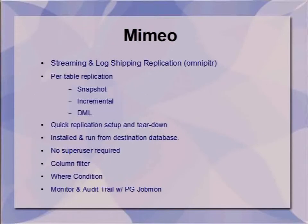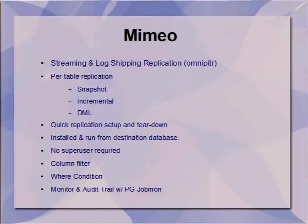Built into Postgres is streaming and log shipping, but that's all-or-nothing — except for the upcoming logical replication features in 9.4. There are three basic types of replication in Mimeo. Importantly, this requires no superuser after installation — you just grant permissions to the users running it. It's installed and run from the destination database, so it's a pull replication system, not push. You set it up on your destination and it pulls data from however many sources you define. You can also tell it to only replicate certain columns, and you can add a WHERE condition to only replicate certain rows.